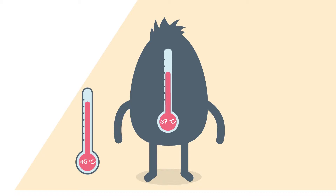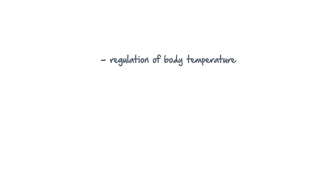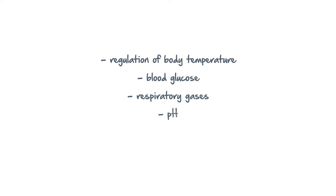Metabolic processes that need to maintain a constant internal environment include regulation of body temperature, blood glucose, respiratory gases, pH, osmoregulation — that is regulation of water and ions in the body — and excretion to remove wastes and toxins.